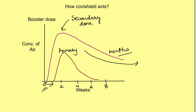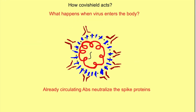Now, if coronavirus enters the body, what will be the response? Once the coronavirus enters, the antibodies already present in the body due to the secondary response will go and attach to the spike proteins, which they had already recognized before. They prevent the virus from attaching to the cell. This is known as neutralization — where antibodies bind with the active component of the pathogen and prevent it from entering into the cell. So already-circulating antibodies neutralize the spike proteins.